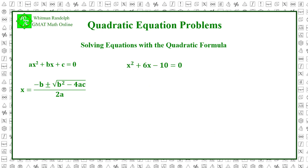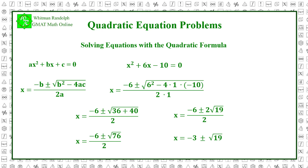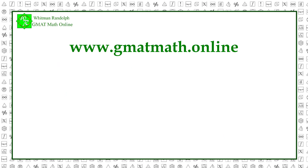Here's a second example: x squared plus 6x minus 10 equals 0. Plugging into the formula, we get x equals minus 6 plus or minus the square root of 6 squared minus 4 times 1 times minus 10, over 2 times 1. Or, x equals minus 6 plus or minus the square root of 36 plus 40, over 2. Thus, x equals minus 6 plus or minus the square root of 76, over 2, which results in x equals minus 6 plus or minus 2 times the square root of 19, over 2, giving us x equals minus 3 plus or minus the square root of 19.